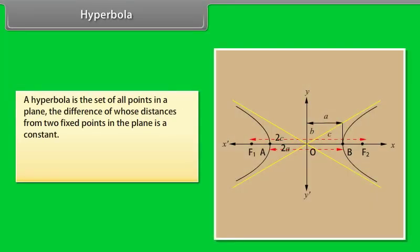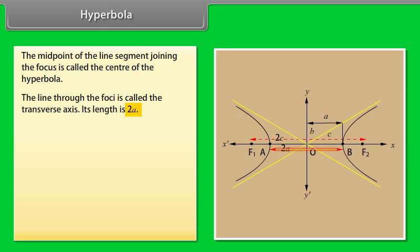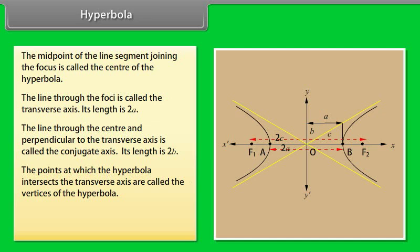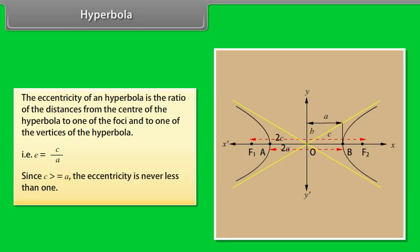A hyperbola is the set of all points in a plane where the difference of distances from two fixed points is a constant. The two fixed points are called the foci. The midpoint of the line segment joining the foci is the center. The line through the foci is called the transverse axis, with length 2a. The line through the center perpendicular to the transverse axis is the conjugate axis, with length 2b. The vertices are where the hyperbola intersects the transverse axis. The distance between the foci is 2c. The eccentricity is e = c/a, and since c ≥ a, the eccentricity is never less than 1.